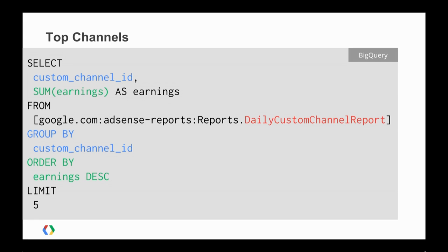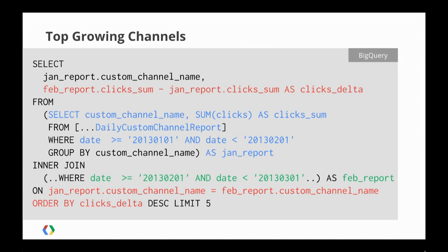Here is a very simple query to retrieve your top channels by earnings, just to give you an idea of what it would look like. In blue, we're selecting and grouping by custom channel ID, and in green we're retrieving and ordering by earnings. You probably already know your top five custom channels, so more interesting might be channels that have grown the most month on month. This is not readily available in the UI, but in BigQuery is quite easy to retrieve.